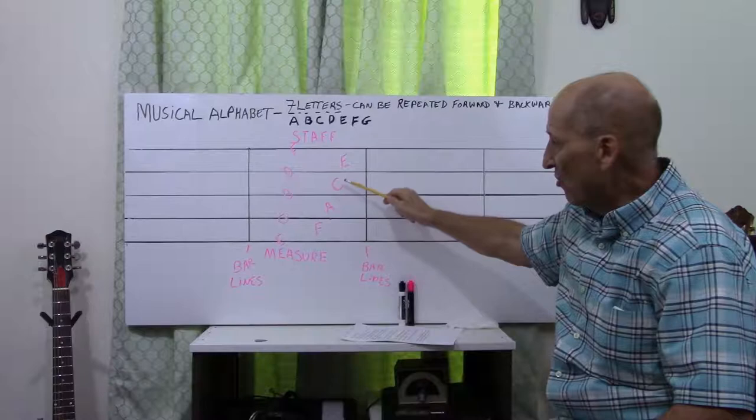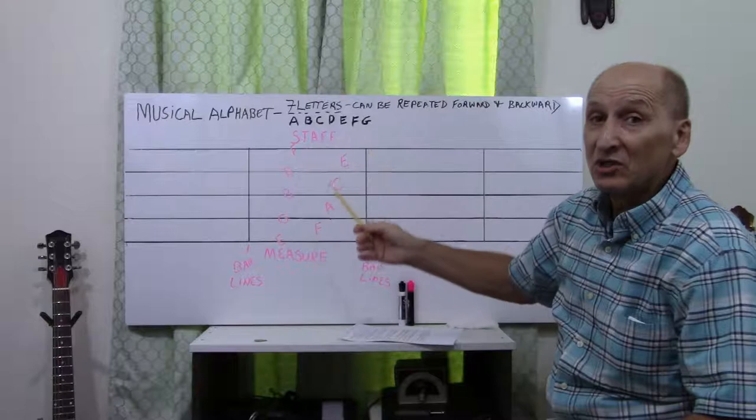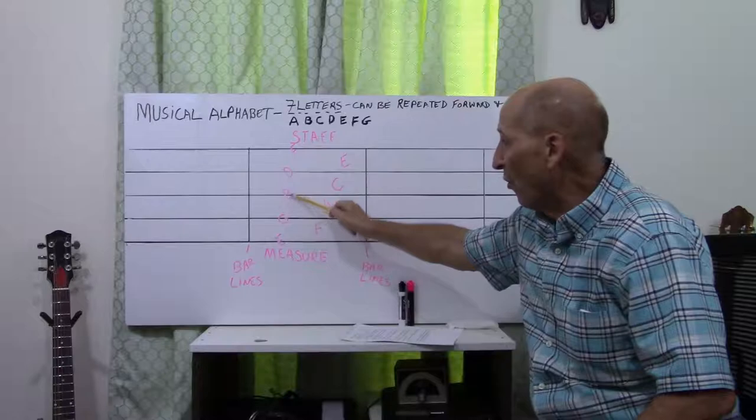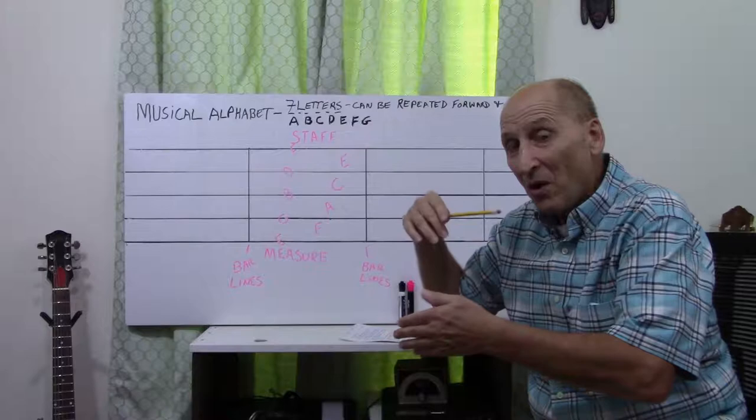First space, F. Second space, A. Third space, C. Fourth space, E. What does it spell? Yeah, face. An acronym here is Every Good Boy Does Fine.